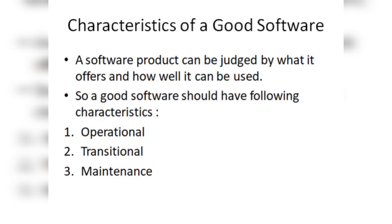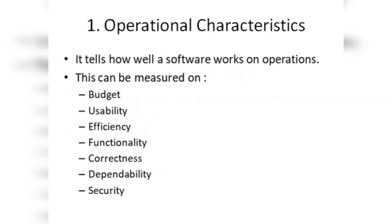To make any software a good software, we need three basic characteristics: operational characteristics, transitional characteristics, and maintenance characteristics. Let us understand each one of them one by one, starting from the first — operational characteristics.